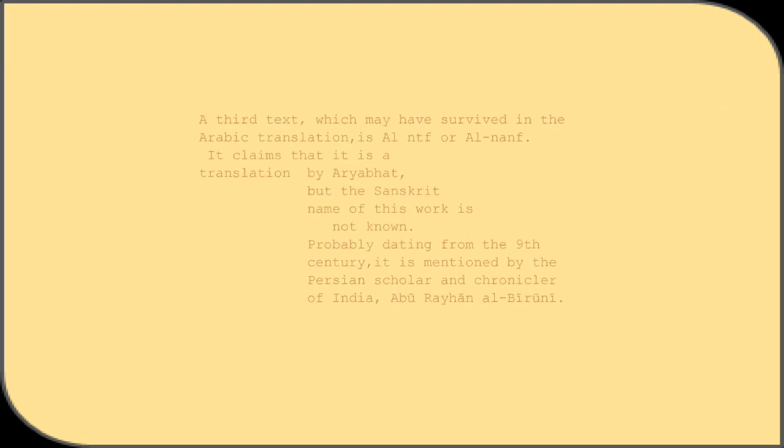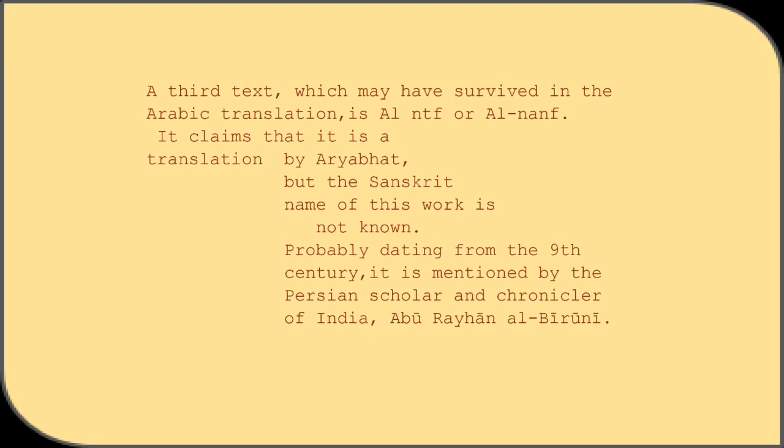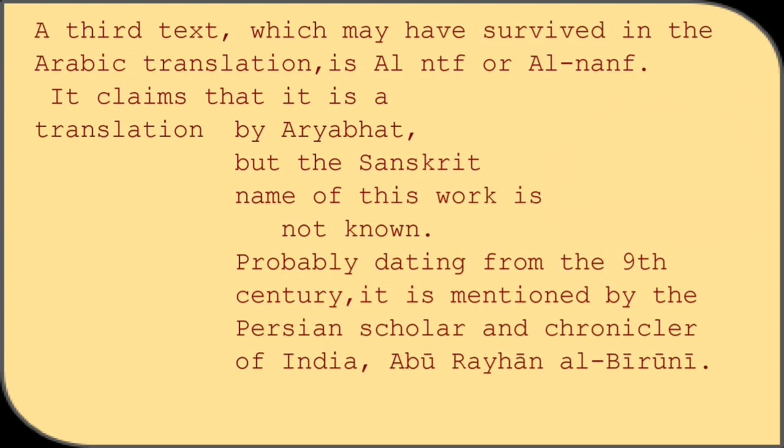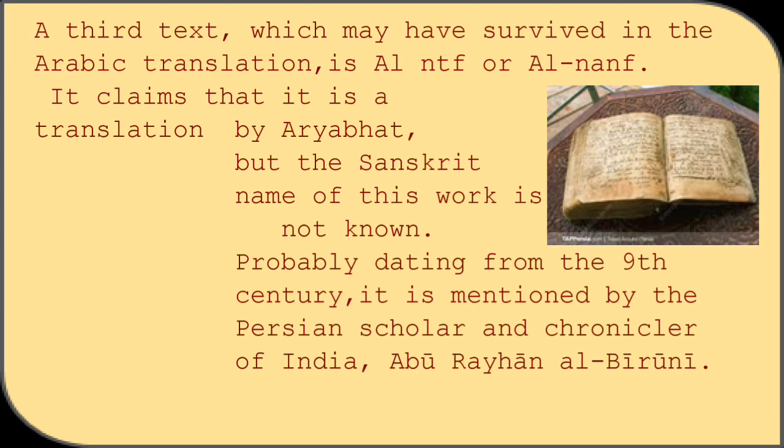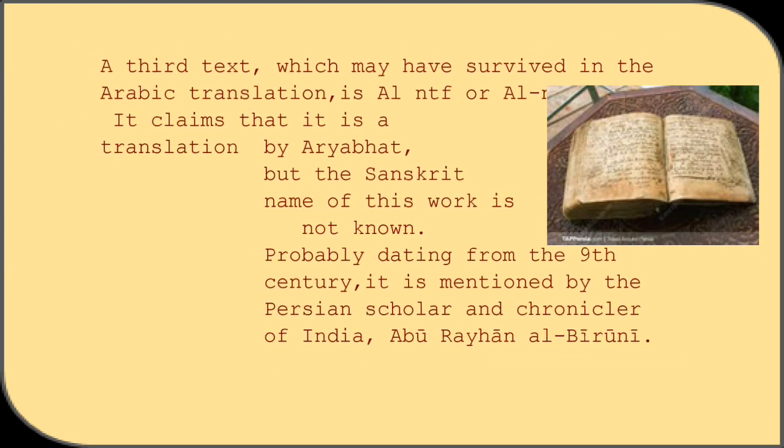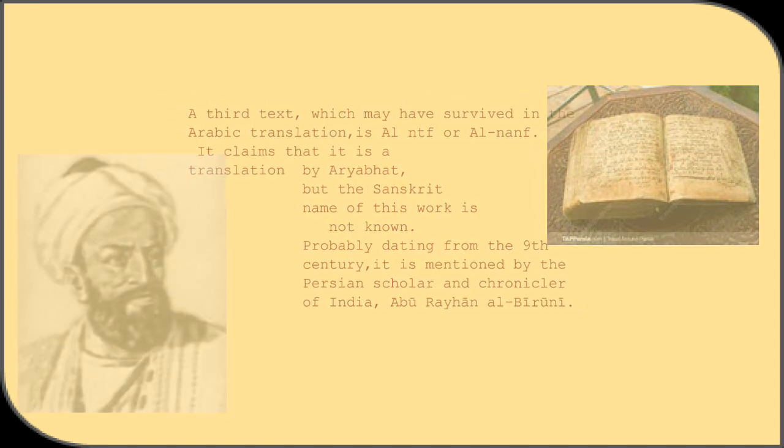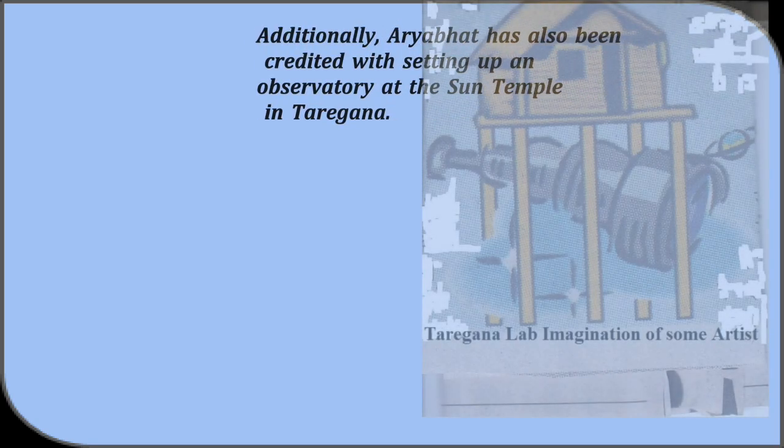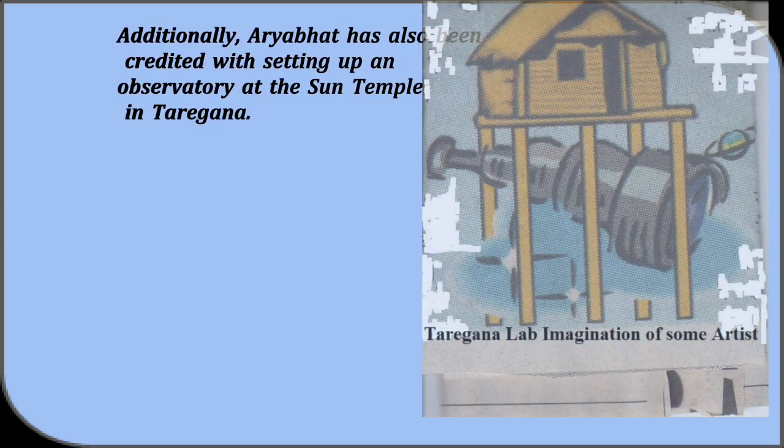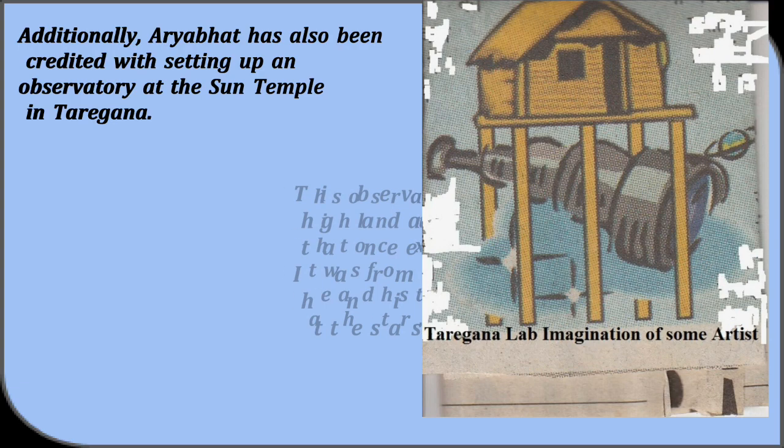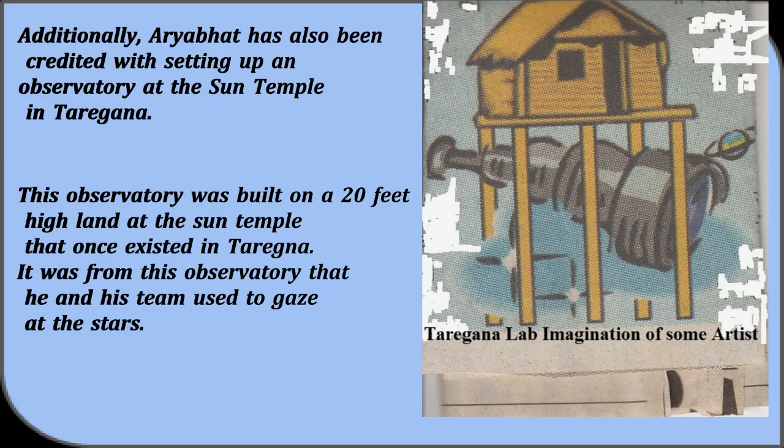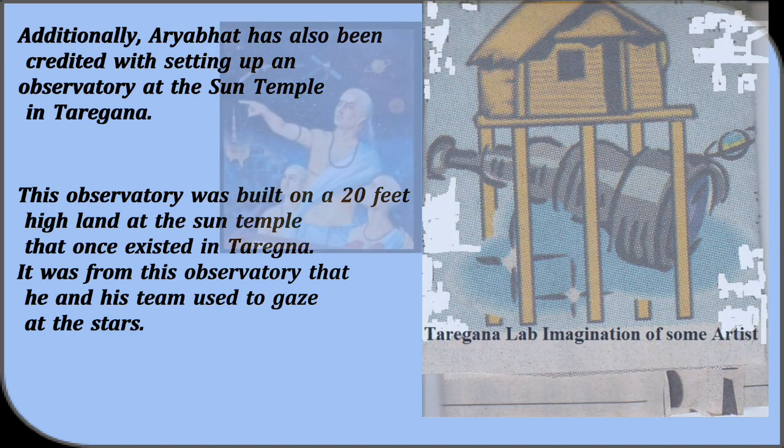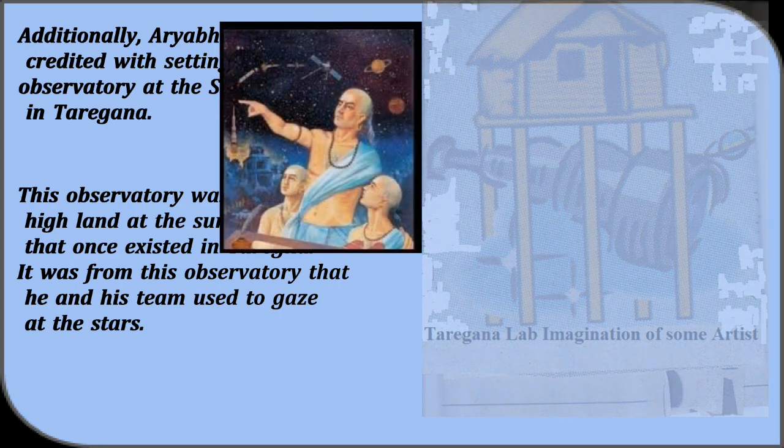A third text which may have survived in the Arabic translation is Al-Nanf or Al-Nan. It claims that it is a translation by Aryabhata but the Sanskrit name of this work is not known. Probably dating from the 9th century, it is mentioned by the Persian scholar and chronicler of India, Abu Rehan Al-Biruni. Additionally, Aryabhata has also been credited with setting up an observatory at the Sun Temple in Taregana. This observatory was built on a 20 feet high land at the Sun Temple that once existed in Taregana. It was from this observatory that he and his team used to gauge the stars.